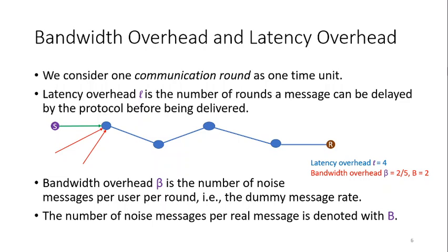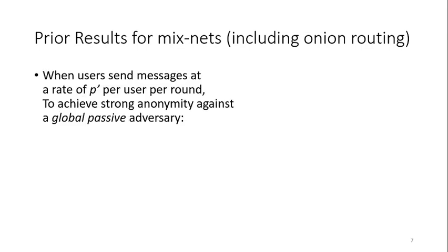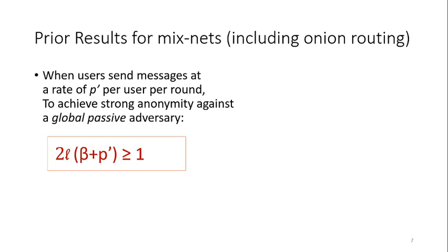Ideally, we want a protocol with strong anonymity with constant latency overhead and constant bandwidth overhead. Our previous paper showed that when users send messages at a rate of P' per user per round, to achieve strong anonymity against even a global passive adversary, we need at least the product of latency times message rate to be greater than one half.